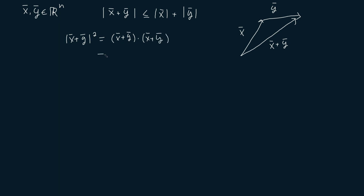And now we're going to use the distributive property of the dot product to get that this is equal to x dot x plus x dot y plus y dot x plus y dot y.